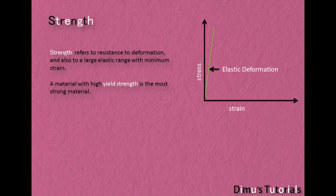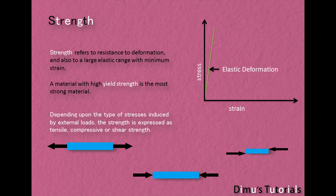Strength. Strength refers to resistance to deformation, and also to a large elastic range with minimum strain. A material with high yield strength is the strongest material. Depending upon the type of stresses induced by external loads, the strength is expressed as tensile, compressive, or shear strength.